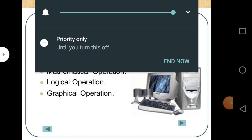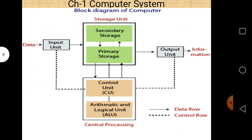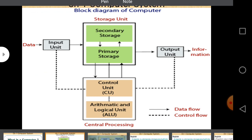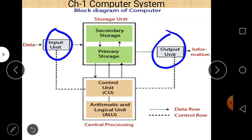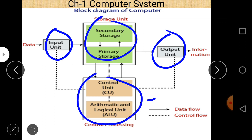These three types of operation can be performed using computers. This is the block diagram of a computer system. There are four different parts, that's why it is called a block diagram of a computer system. All these parts are represented within a block and connected using arrow signs. The four parts are: input device, output device, secondary storage, and CPU. We already discussed CPU and primary memory, but today our topic is secondary storage.